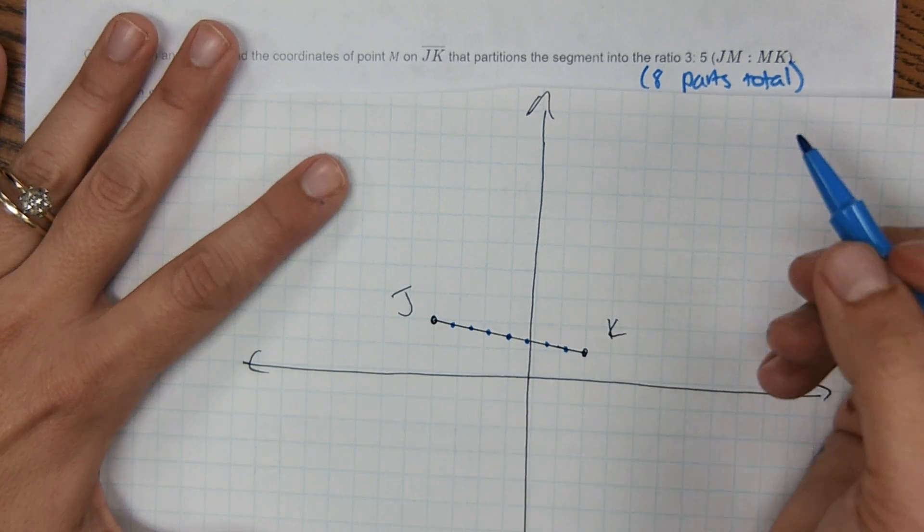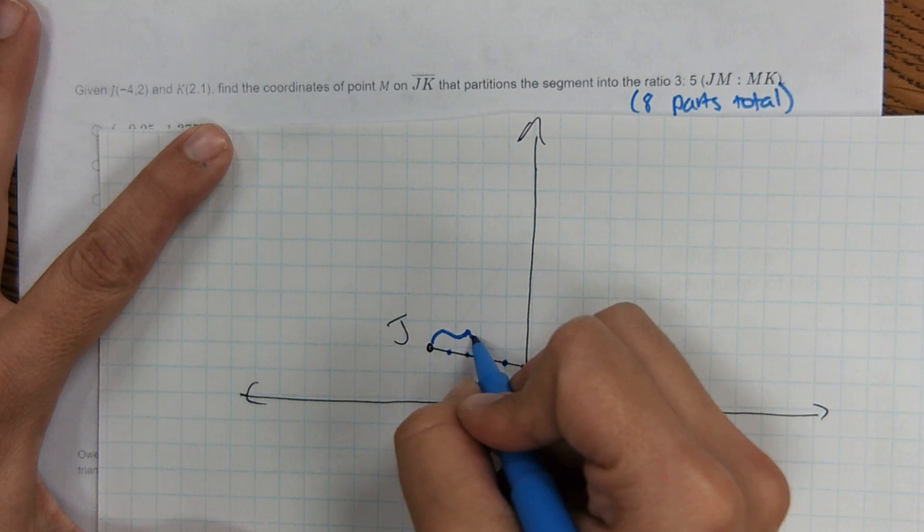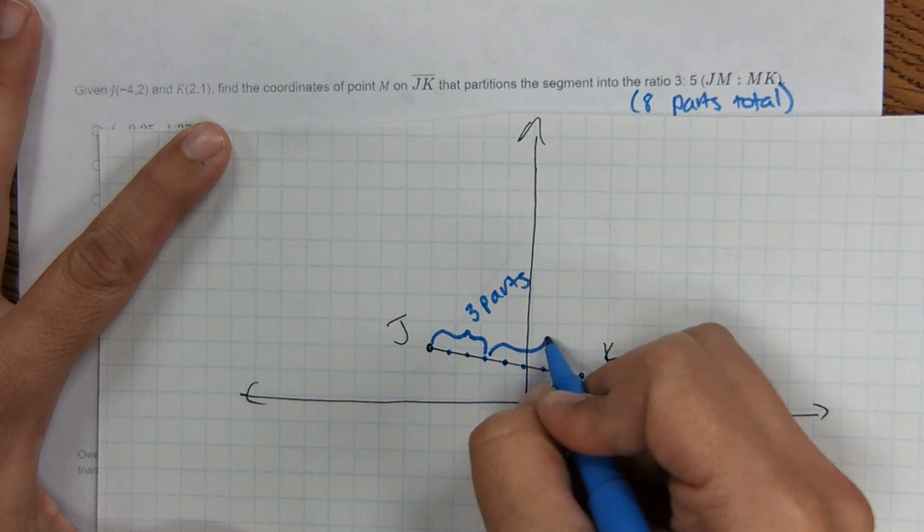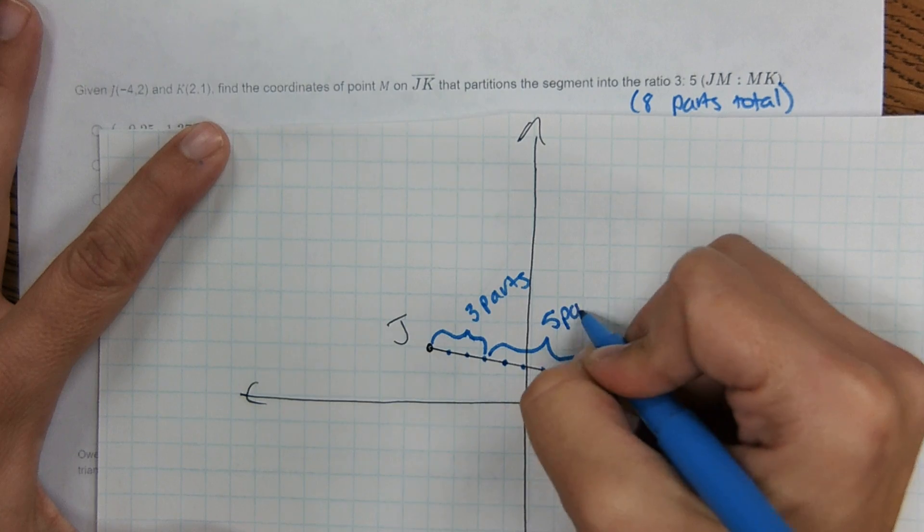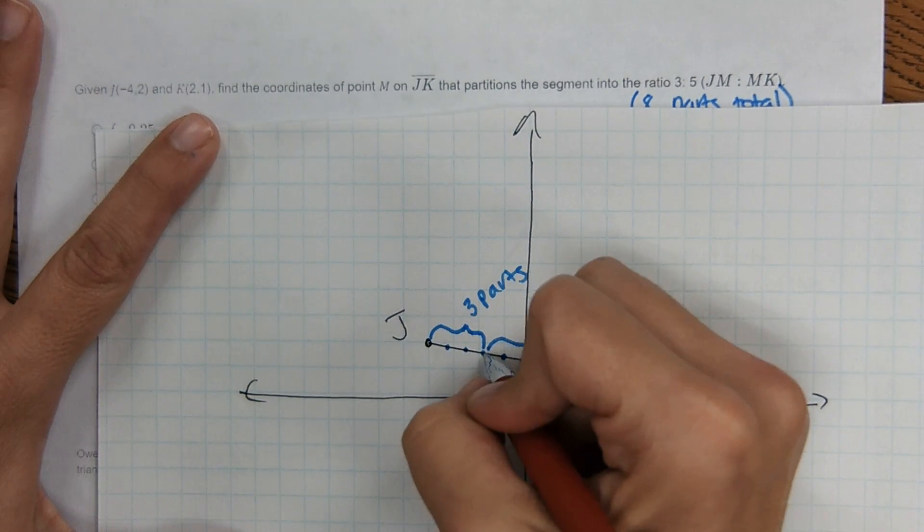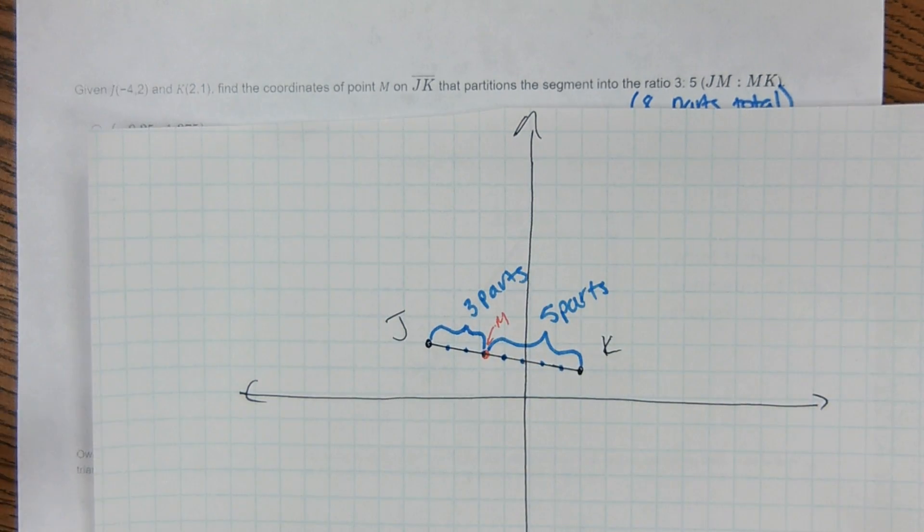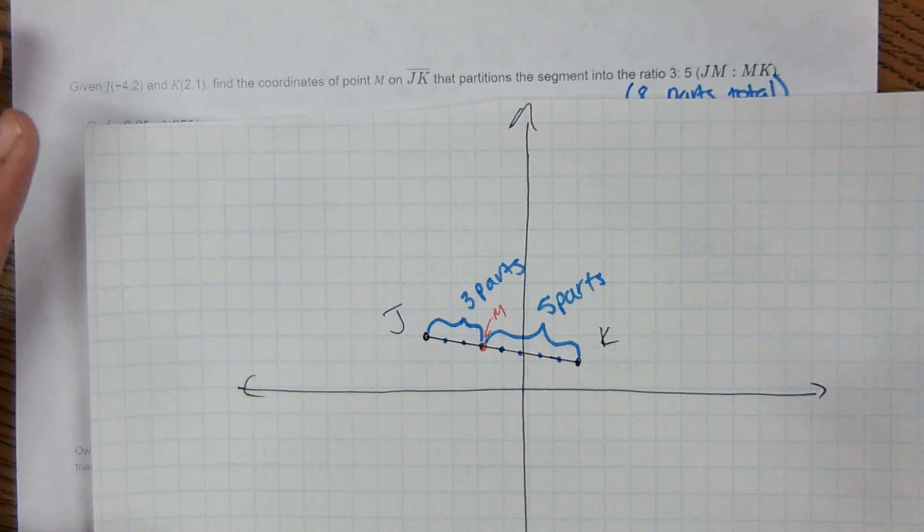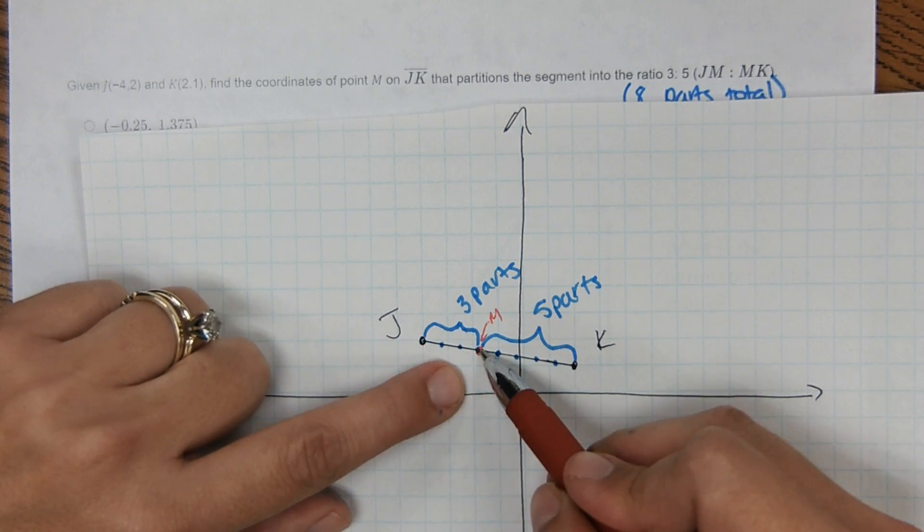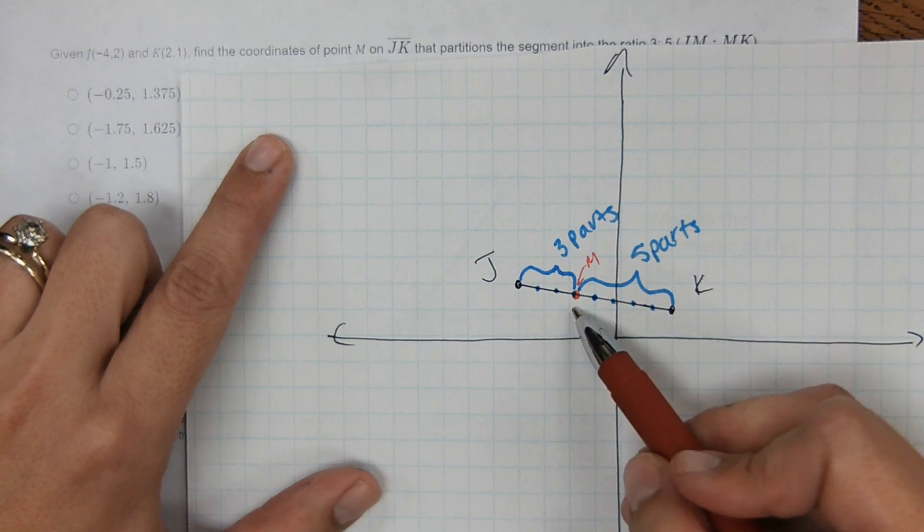And then a 3 to 5 ratio from J to K would be 3 units, 3 parts, and then 5 parts. So the point is right here. This is M. So what am I doing? I'm literally just estimating the 8 parts and this is where my M fell. And then I'm using the answer choices to narrow down my answer.